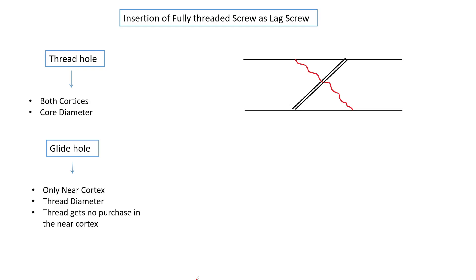Insertion of Fully Threaded Screw as Lag Screw. For this, we make two holes. The first hole is known as a thread hole which involves both the cortices and the diameter is equal to the core diameter of the screw.